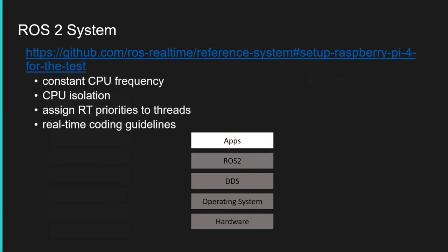For the application and the system in general, we provide a description with a link to how you can configure the system. This really depends on your real-time application, but you have the possibility to set a constant CPU frequency with CPU isolation to isolate real-time applications on particular CPUs. You can also assign real-time priorities to your processes and threads. We also plan to provide real-time coding guidelines, which we don't have yet, but plan to add.